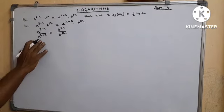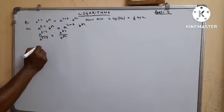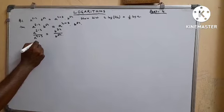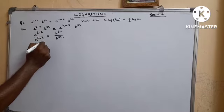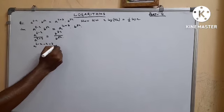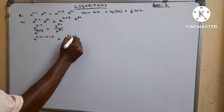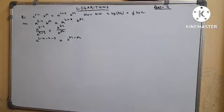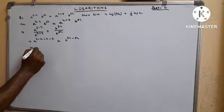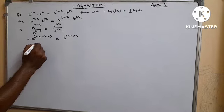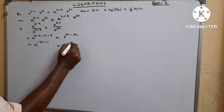Now, according to the theory of indices, when both bases are the same, we subtract the exponents. So the left side becomes (2−x) minus (x+3), and the right side becomes 3x minus 5x. The ultimate result is a^(−2x−1) equals b^(−2x).